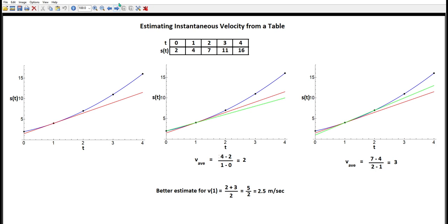What should we take as our estimate? Well, the average is probably the best estimate we can make. v of 1, we're going to estimate as 2 plus 3 divided by 2, or 5/2, which is 2.5 meters per second.